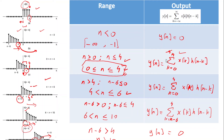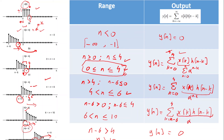Since x[k] = 1 for all k in its range, it does not affect the product, so each summation reduces to the sum of h[n−k] = α^(n−k). For Case 2 (0 ≤ n ≤ 4) the sum is from k=0 to n of α^(n−k); for Case 3 (4 < n ≤ 6) it is k=0 to 4; and for Case 4 (6 < n ≤ 10) it is k = n−6 to 4, all of α^(n−k).